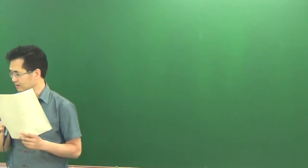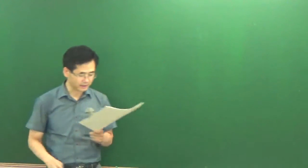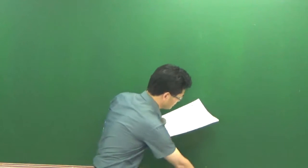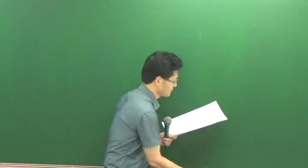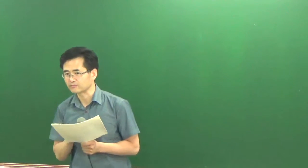이제 1번부터 풀이를 하겠습니다. 1번은 푸는 문제입니다. 딱 봤을 때 이건 푸는 거예요. 질문을 봤을 때 질문을 보고 판단을 해야 돼요. 이게 균형 임대료와 균형 가격 이렇게 묻잖아요. 이렇게 묻는 거는 푸는 문제입니다.